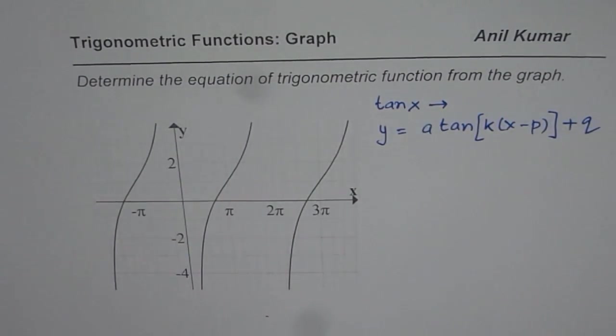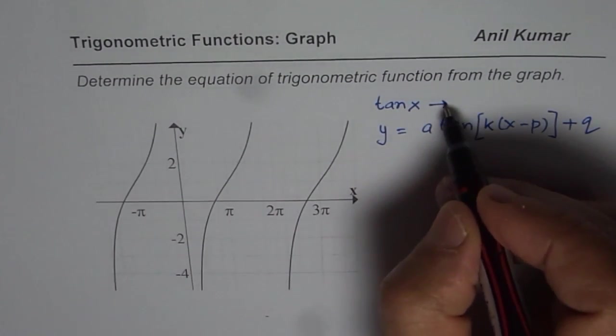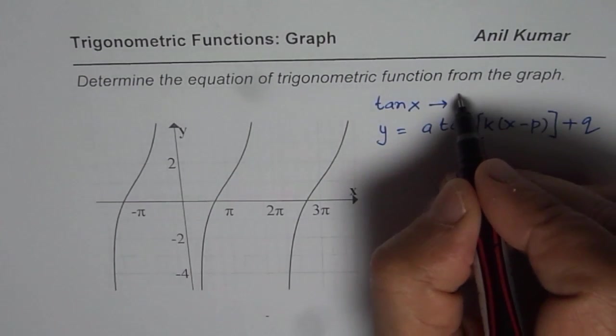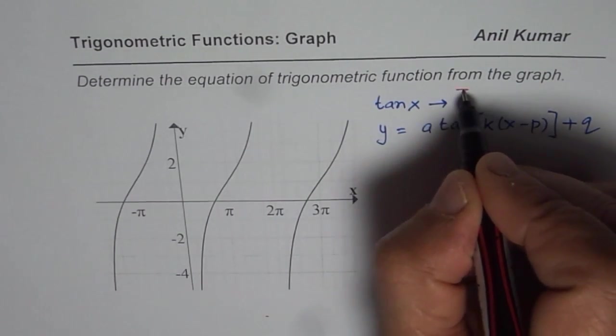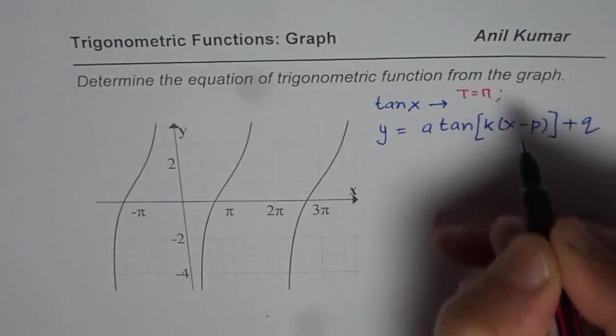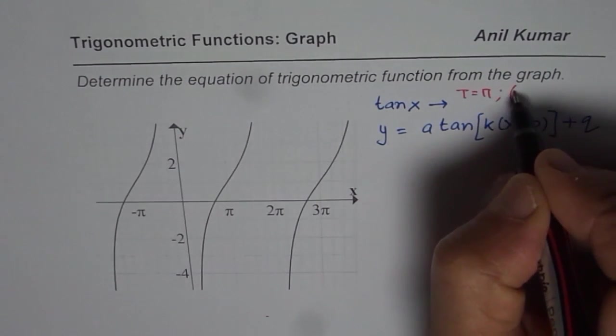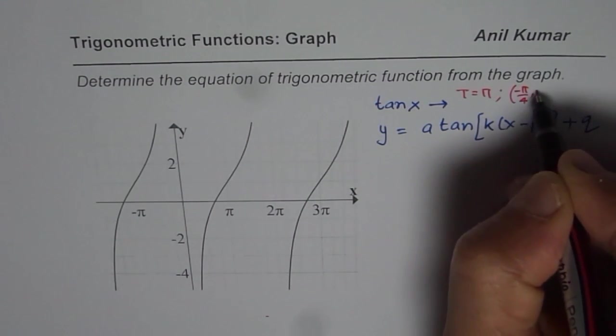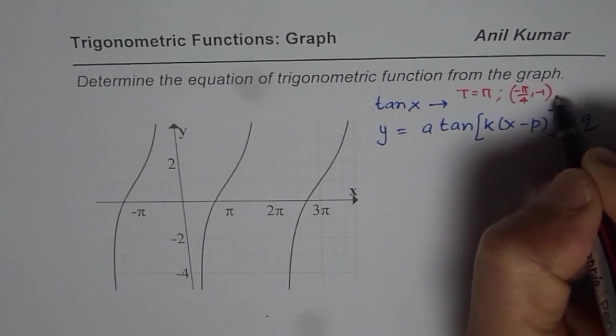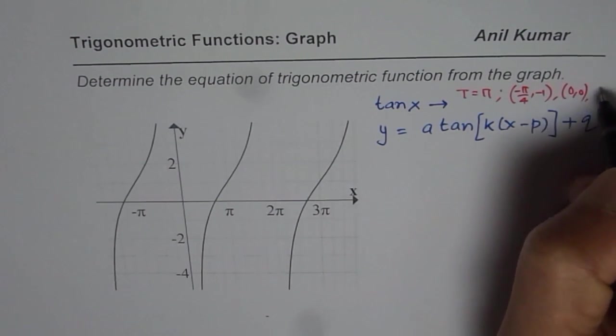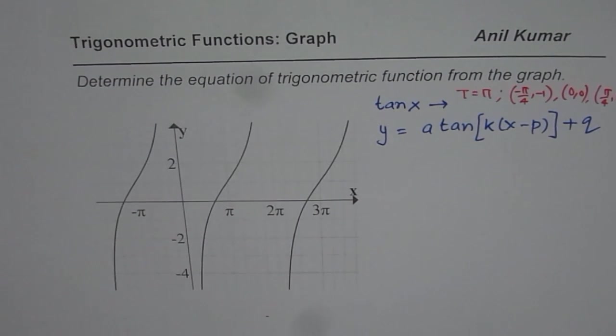In general, when we have tan x as our function, what are we looking for? We are looking for a period, so the time period is π for this, and critical points are minus π by 4 minus 1, zero zero, and π by 4, 1. These are the critical things which we are looking for.